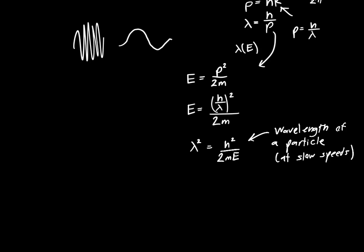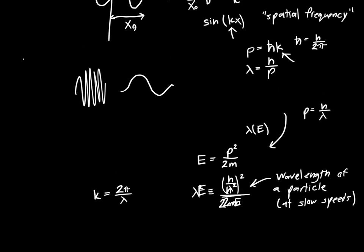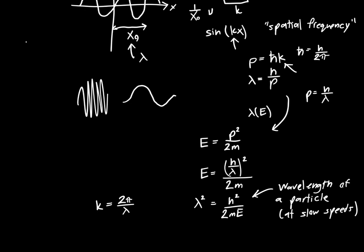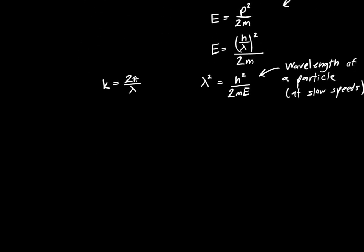Or, more conveniently, we like to represent things in terms of the wave number. So the wave number, k, is just 2pi divided by the wavelength, lambda. And lambda is just, again, the spatial period. So I wrote it as x naught up here, but it's usually called lambda. So lambda is the period in space of spatially oscillating things. So if k equals 2pi over lambda, then lambda is just 2pi over k. And we can replace that here, and we get 2pi over k squared equals h squared over 2mE.